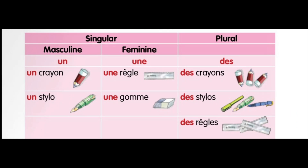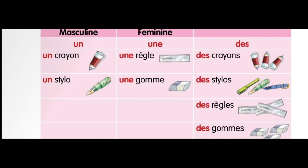Here is some extra knowledge: usually when we transform a word into its feminine form, we add an 'e'. For example, the masculine indefinite article is 'un' and the feminine is 'une' — we have added 'e'. Examples: 'un crayon' means a pencil, 'un stylo' means a pen. In feminine we have 'une règle' which is a ruler, and 'une gomme' which is an eraser.